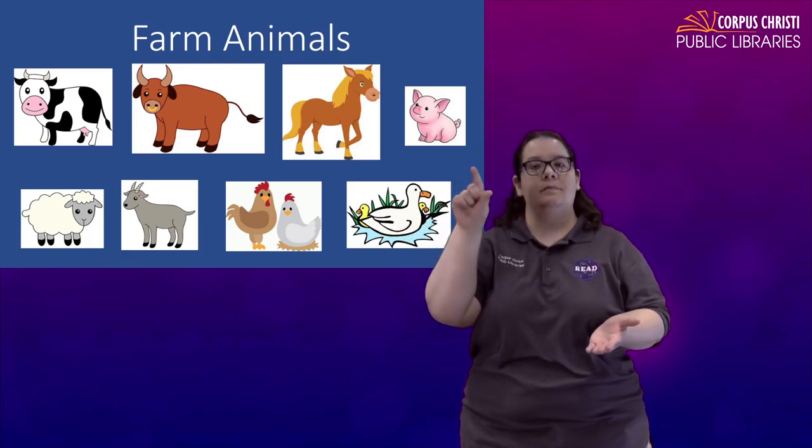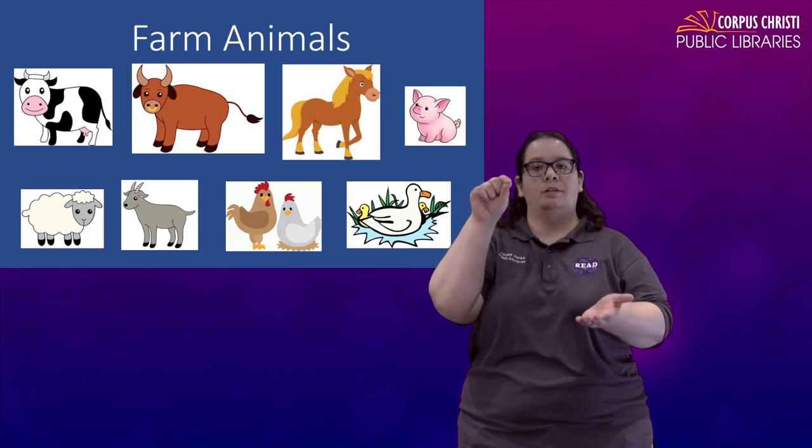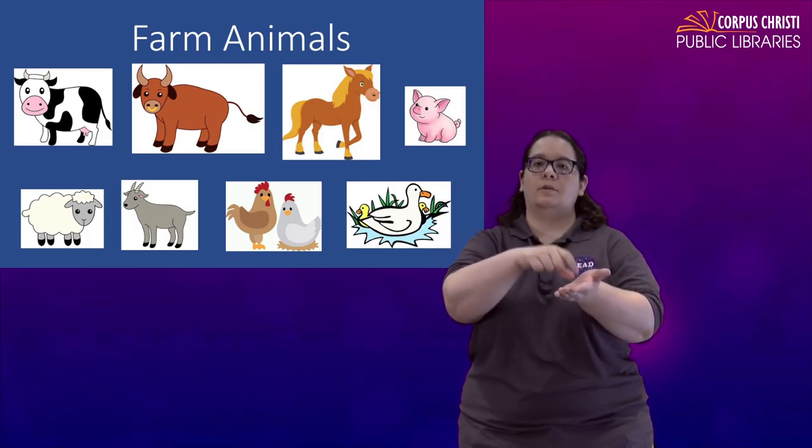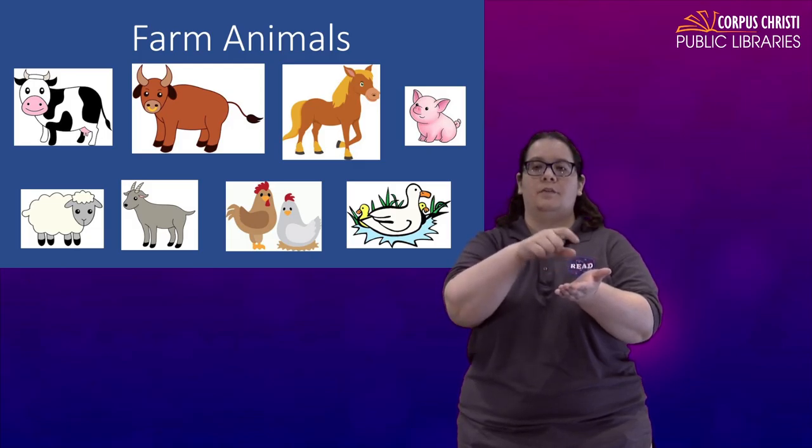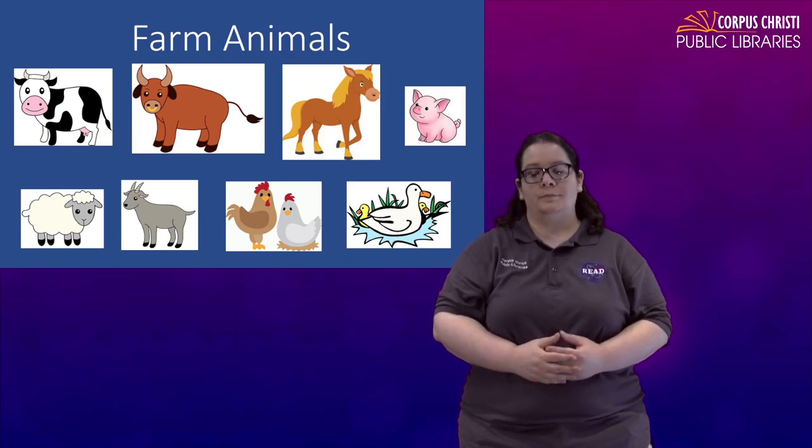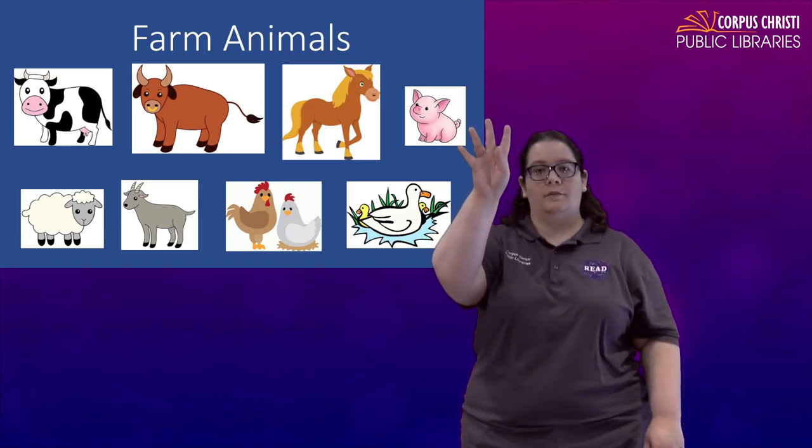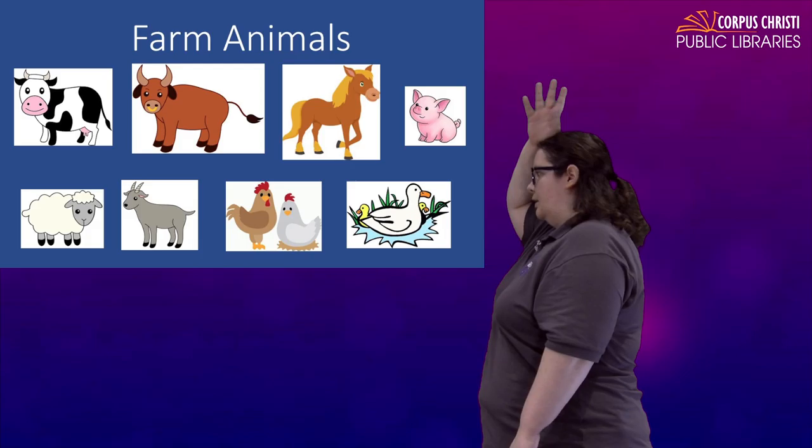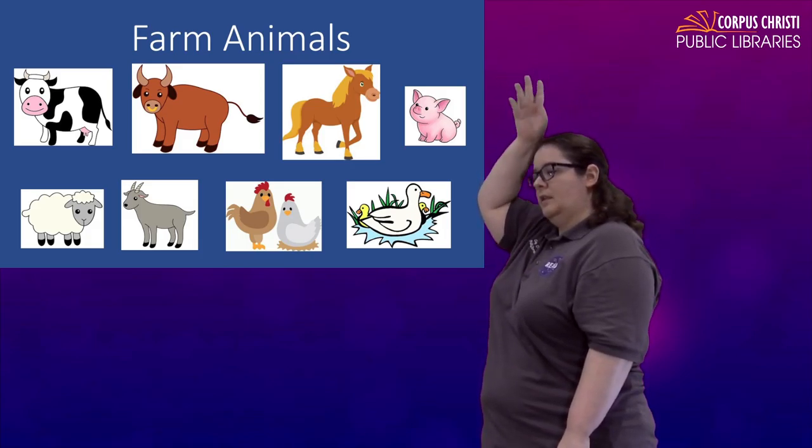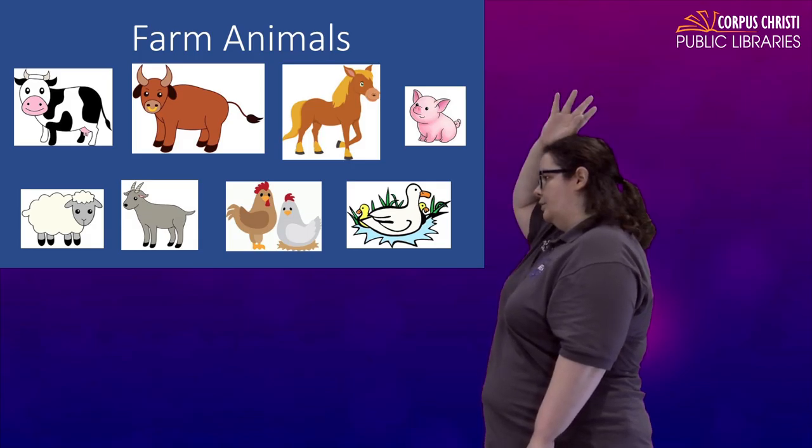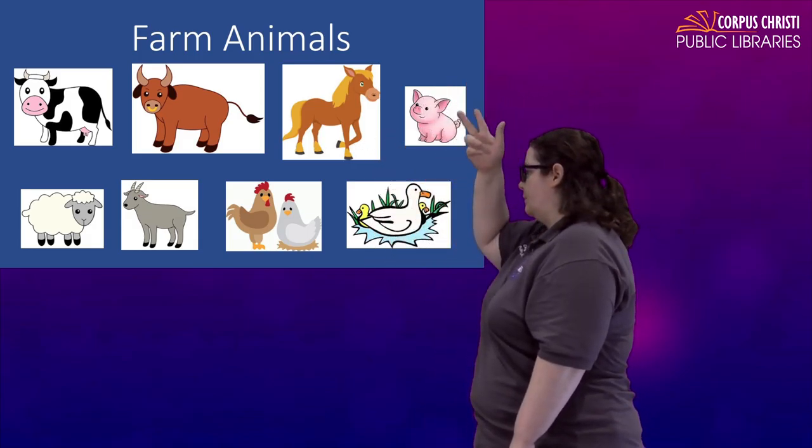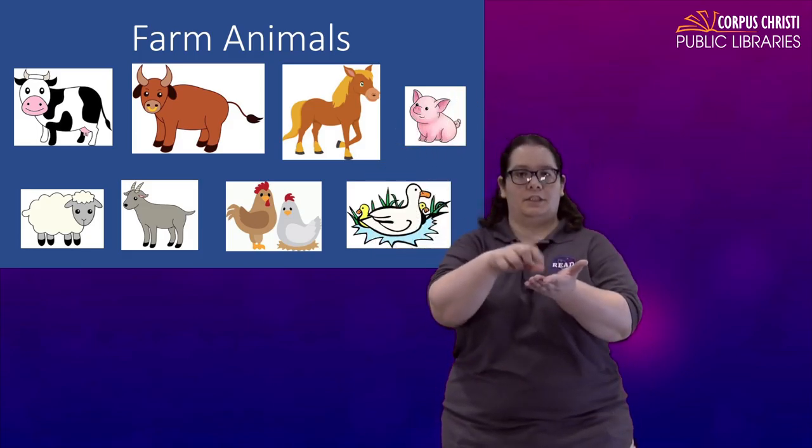For a chicken you're going to take that sign for bird and you're going to peck in an open palm like you're picking up some corn or some chicken feet off the ground. If you're talking specifically about a rooster you can take the number four and kind of roll it on top of your head like that little red thing that they have. So rooster you can also do it with the number three rooster and chicken.